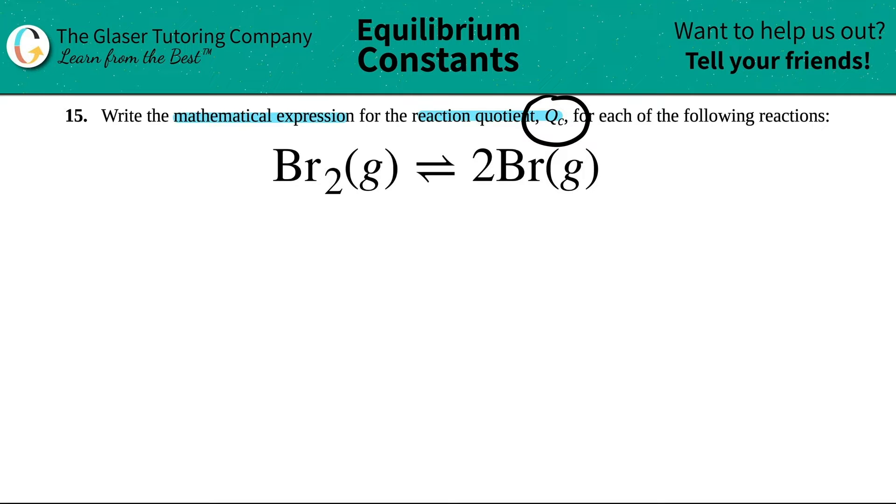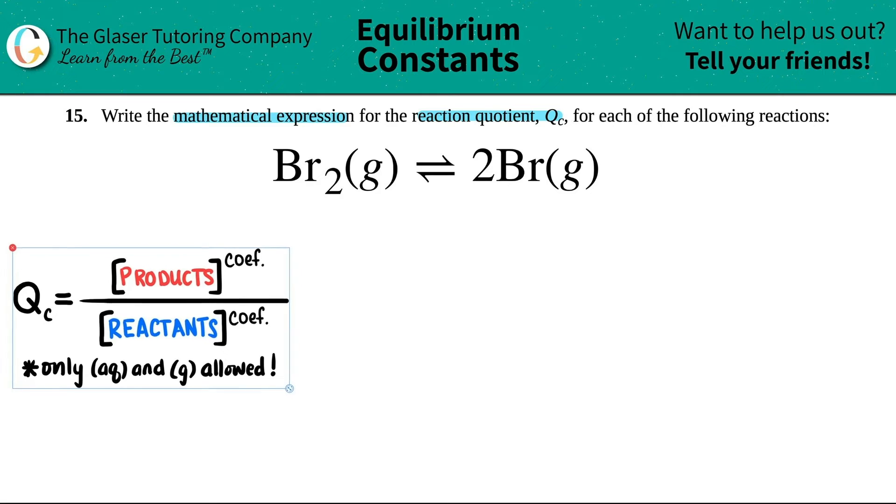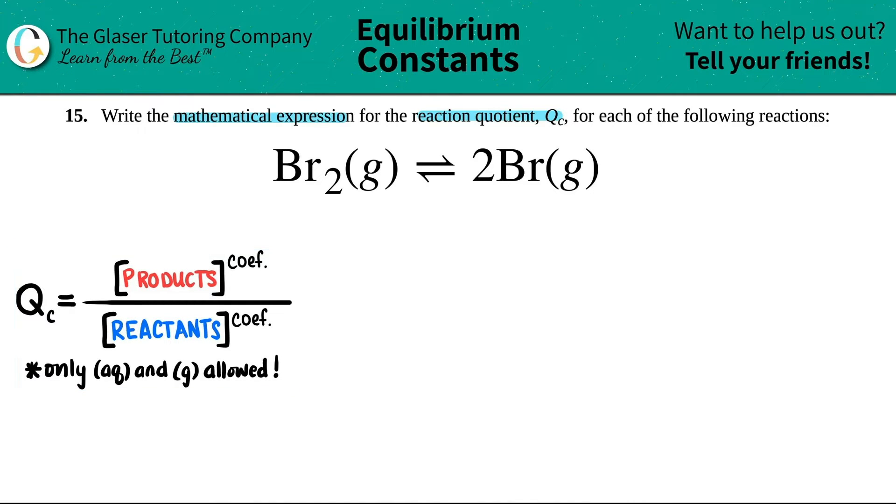So the Qc formula is a very generalized formula. Maybe I'll just put this over here. So the Qc, C stands for concentrations. When we start doing the numbers and plugging it in, we're always going to use concentration values, aka molarity. So the Qc always equals the concentration of the products. These brackets is a symbol for concentration, aka molarity.